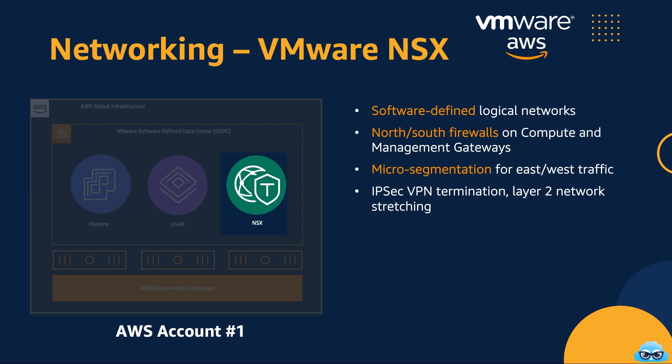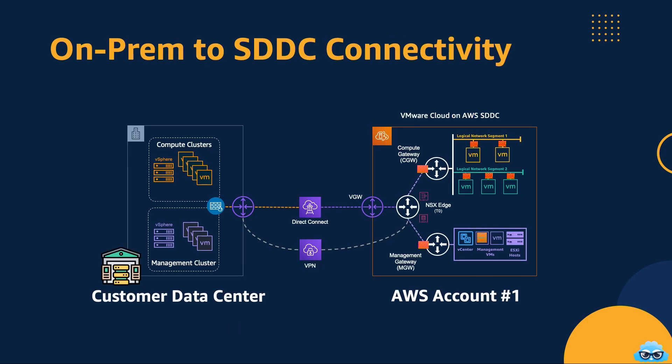NSX isn't limited to just routing and segmentation — it's a versatile toolkit that can handle a range of functions, including VPN termination, load balancing, and more. It's all about creating a flexible, secure, and high-performance networking environment. The NSX layer brings the power of software-defined networking to VMware Cloud on AWS, empowering you to build a dynamic and secure network infrastructure that adapts to your specific needs, whether it's routing traffic, enhancing security, or facilitating advanced networking functions.